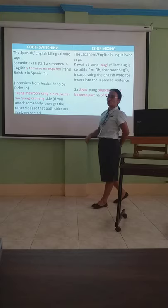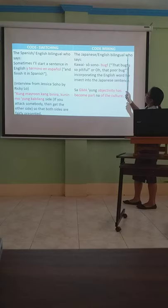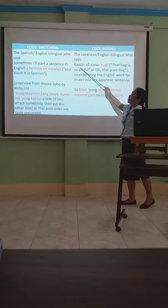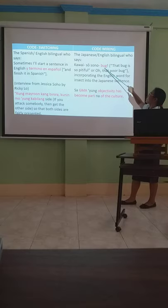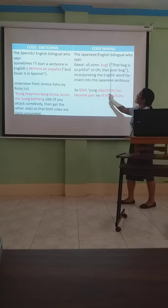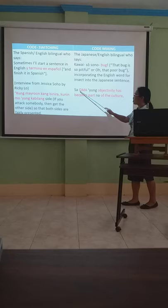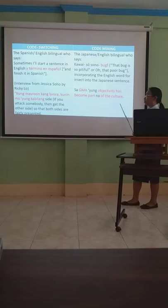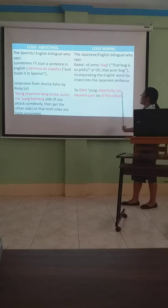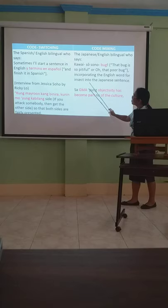While in code mixing, a Japanese-English bilingual says: 'Kawaii susuno ba?' — where 'Kawaii susuno' are Japanese words and 'bab' is an English verb. In English, that means 'that bab is so pitiful' or 'oh, that poor bab.' So, incorporating the English word for insect, 'bab,' into the Japanese sentence — that is code mixing. Another example: 'Sa GMA, yung objectivity has become part of the culture.' The highlighted words — 'objectivity has become part of the culture' — are English, mixed with Tagalog words 'Sa' and 'yung.' So that is code mixing.